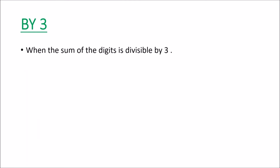Now let us see the divisibility test of 3. Any number is divisible by 3 when the sum of its digits is divisible by 3. Let us take an example: we have a number and we sum up all its digits. The sum of all these digits is 21. Since 21 is divisible by 3, this number is divisible by 3.